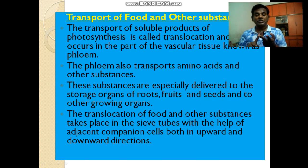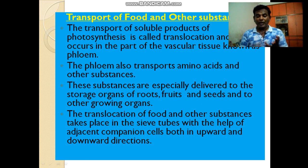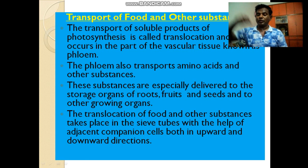In xylem we have vessels and tracheids, and in phloem we have sieve tubes. The translocation of food and other substances takes place in the sieve tubes with the help of adjacent companion cells, both in upward and downward directions.